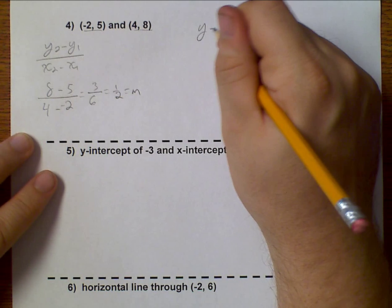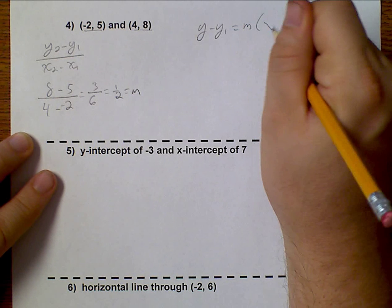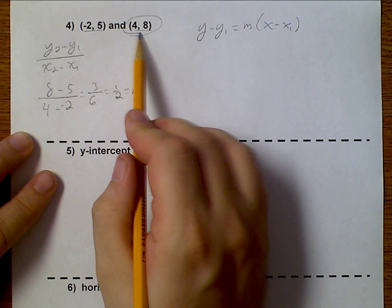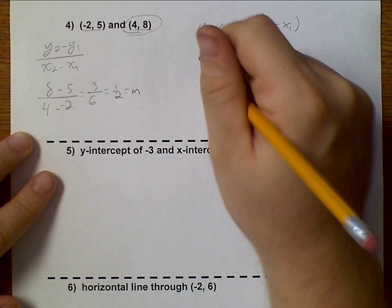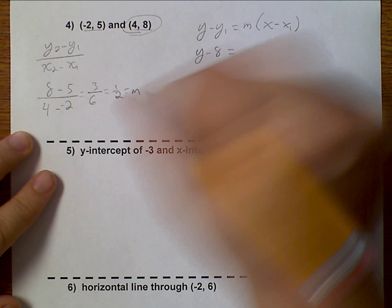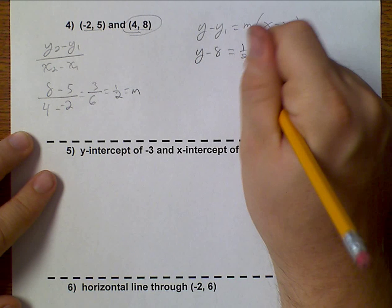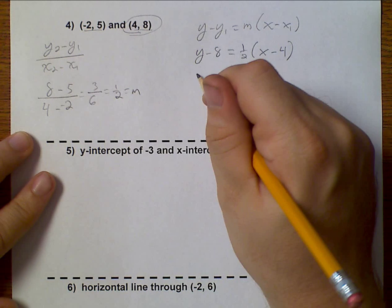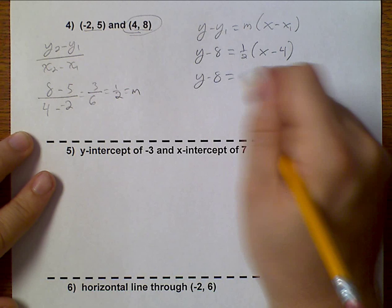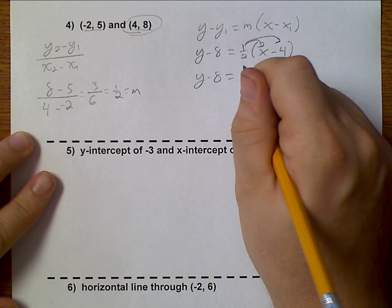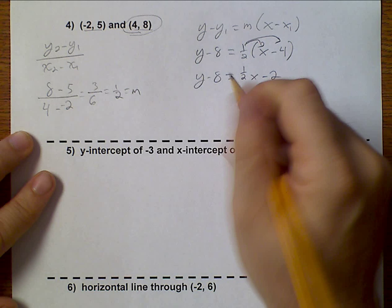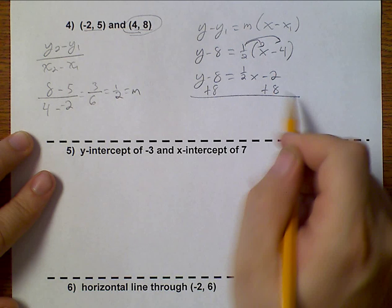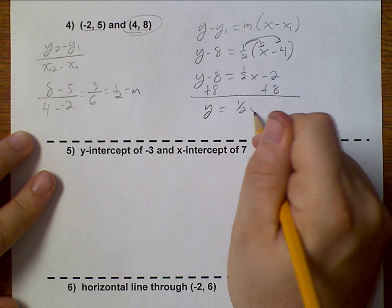y minus y1 equals m times x minus x1. Choose whatever point you want. I'm going to use that one because it doesn't have any negative signs. So y minus 8 equals 1 half x minus 4. Nothing happens on this side. I distribute the 1 half. I get 1 half x minus 2. To get the y alone, I add 8 to both sides, and I get that y equals 1 half x plus 6.